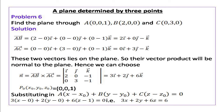Vector n equals 3i + 2j + 6k. To find the equation of a plane we need two things: a vector perpendicular to the plane and a point on the plane. We have already found a vector perpendicular to the plane. Take any of the three points as P0(x0, y0, z0). Here I take it to be (0,0,1).